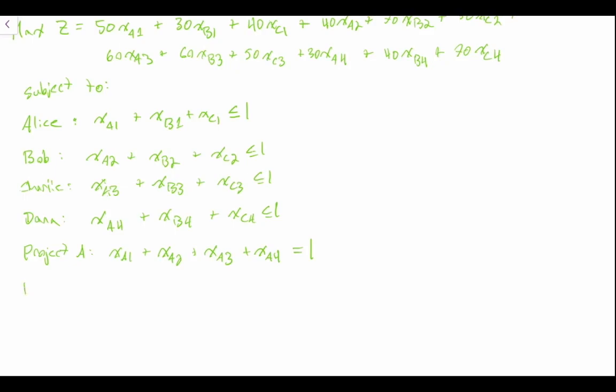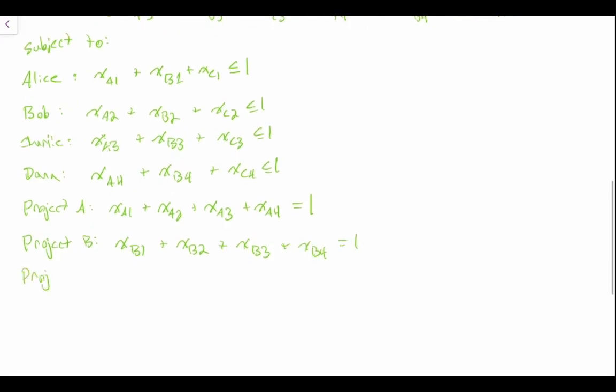We'll do it again for project B. This is XB1 plus XB2 plus XB3 plus XB4, again equal to one. And then project C, this is XC1 plus XC2 plus XC3 plus XC4 is equal to one.